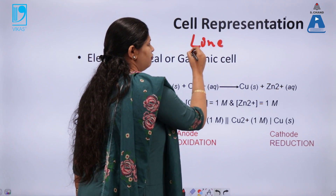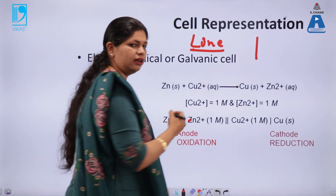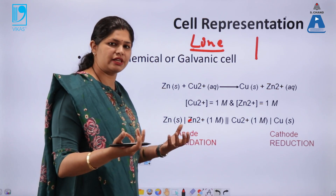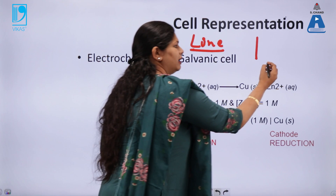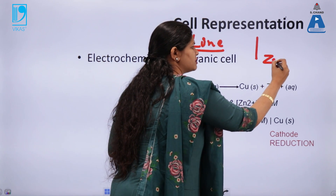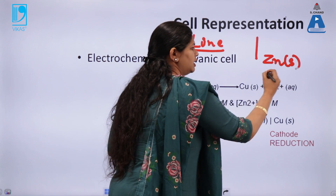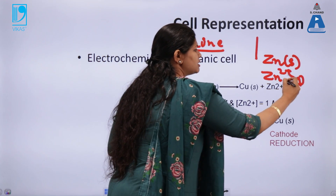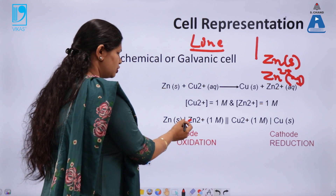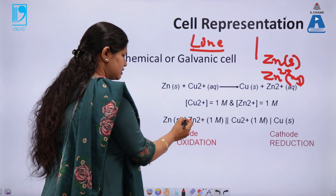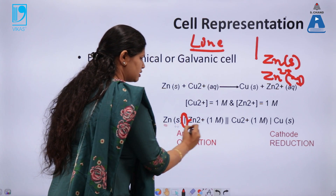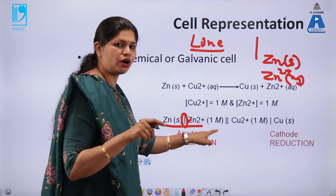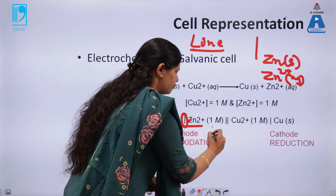An electrochemical cell is represented using a line representation in which a single line separates the species in the two half cells. For example, in the anodic half cell, we have zinc solid as the species and Zn²⁺ as the ionic species, so a single line separating the two is represented.